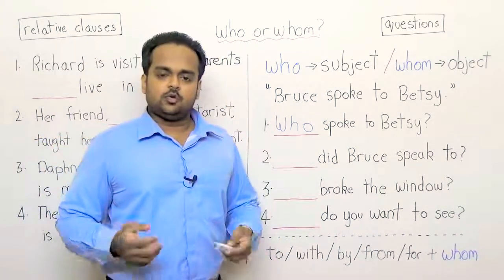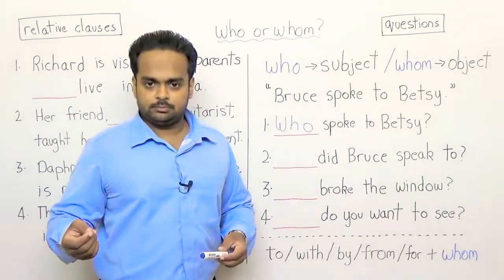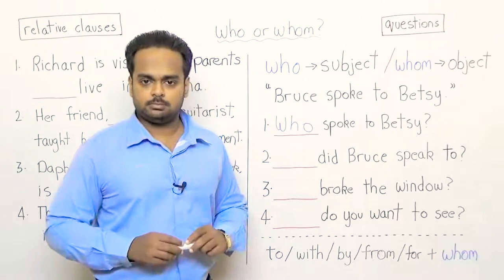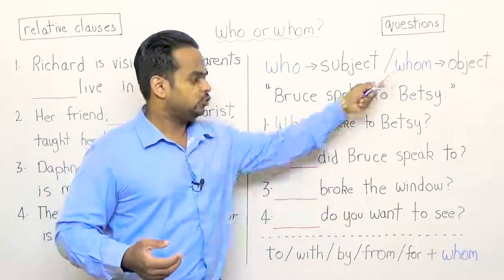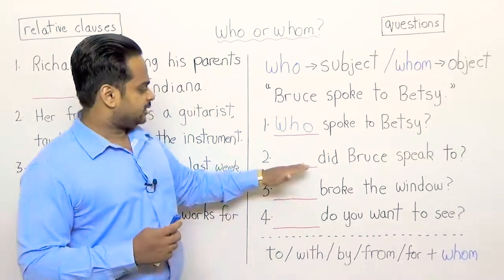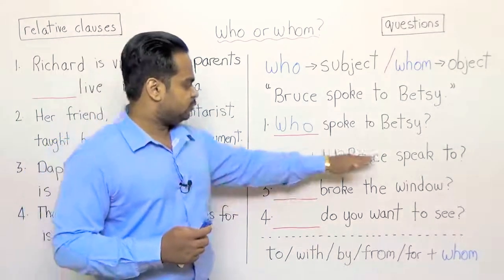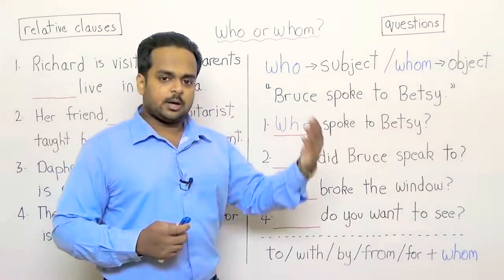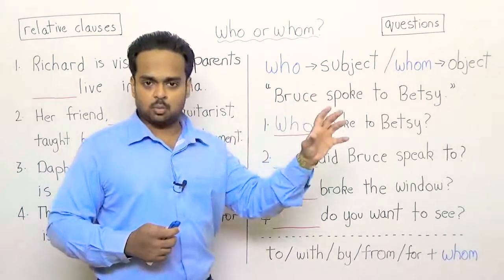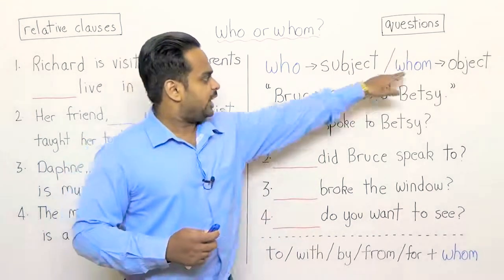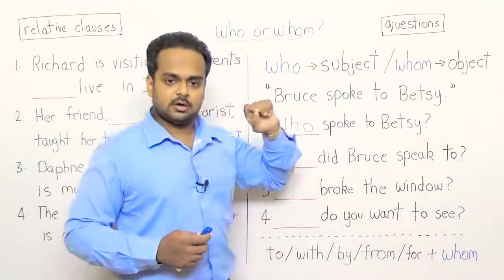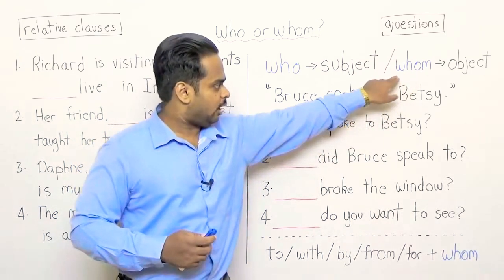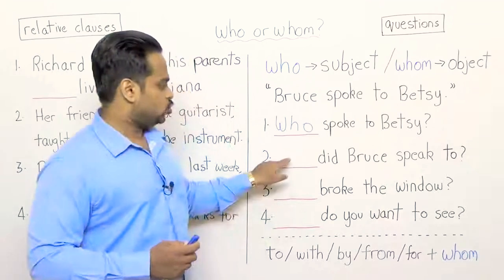But what about if you want to write something formal or if you want to use a proper grammatical form? Well in that case you need to know how to use whom correctly. And in this question, did Bruce speak to — here we know that Bruce spoke to someone but we want to ask who that someone was. That is, we want to ask about the object of the sentence. So because we want to ask about the object we have to use whom over here.